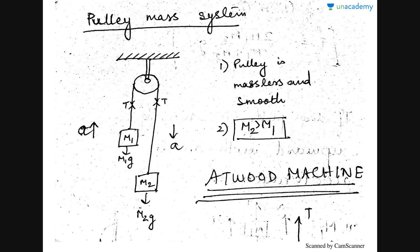Hi everyone, welcome again to this series of courses on laws of motion. In this video I will be sharing some important formulae that you have to learn, and all of these will be useful for your pre-medical examination. The first system we are going to see is the pulley-mass system. The first assumption is that the pulley is massless and smooth — there is no friction between the pulley and the strings. We are considering an ideal system and not accounting for the mass of the pulley in the equations of motion.